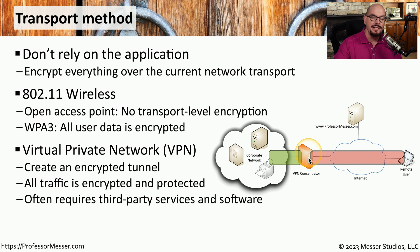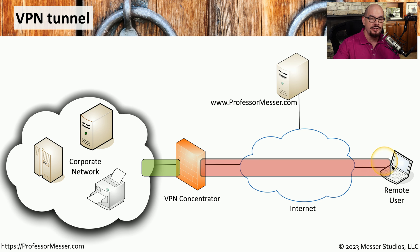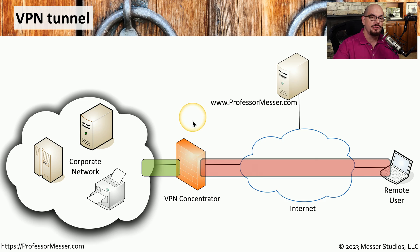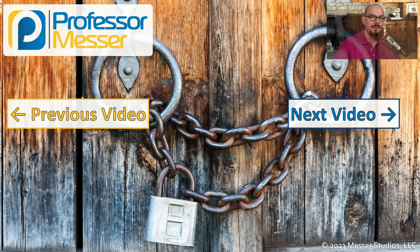Everything sent over that network will be encrypted. The concentrator will decrypt that information and send the non-encrypted data into the network on the other side. Although this provides an encrypted tunnel, it may require the installation of additional software on your device, and you may need to install your own VPN concentrator or purchase access to a third-party VPN service.